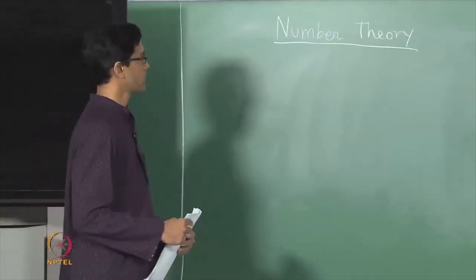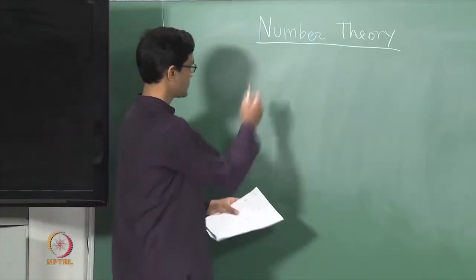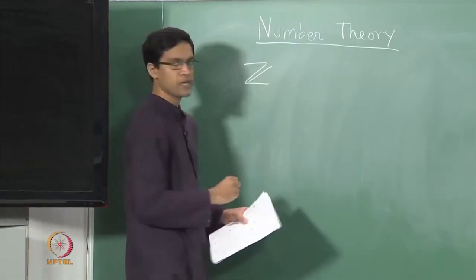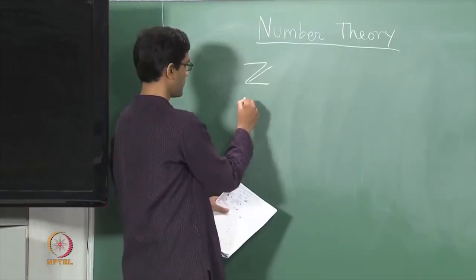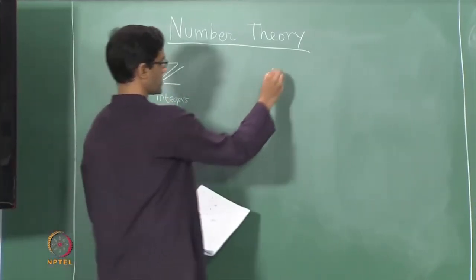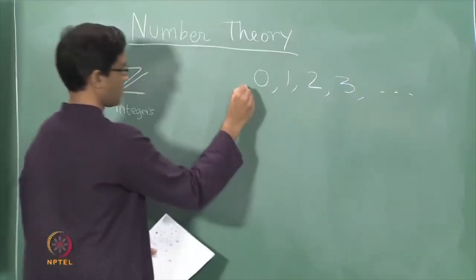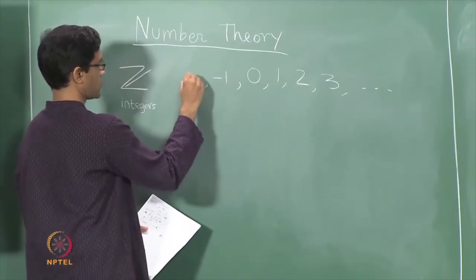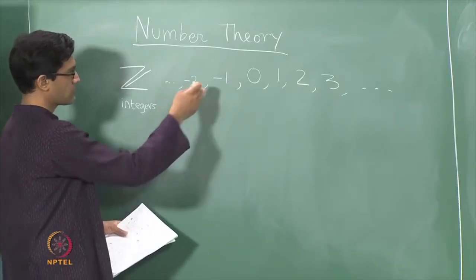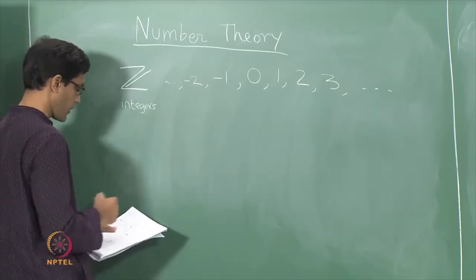Today we will talk about some elementary number theory. Number theory really concerns properties of the set of integers, which we denote by Z. This is the set of all numbers 0, 1, 2, 3 and so on, also the negative integers. Sometimes we will just restrict ourselves to the positive integers, but it is not too important.